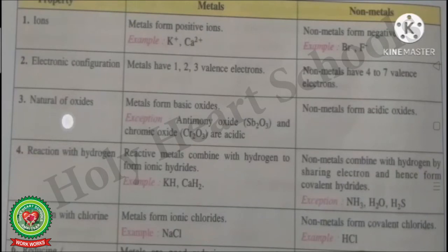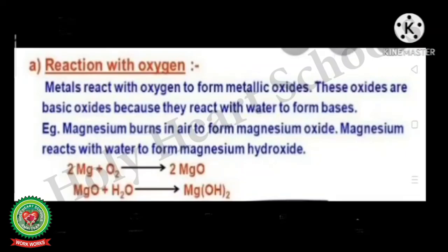The next chemical property is the nature of oxides. Metals form basic oxides, while non-metals form acidic oxides. Metals react with oxygen to form metallic oxides, which are basic because they react with water to form bases. For example, magnesium burns in air to form magnesium oxide (MgO). Magnesium oxide then reacts with water to form magnesium hydroxide, Mg(OH)2, which is basic in nature.